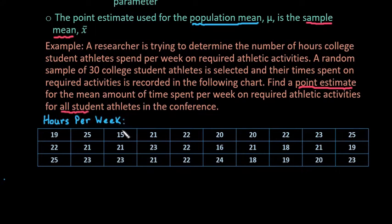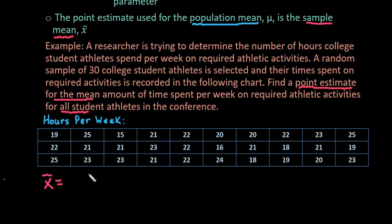We're looking at all student athletes in the conference and trying to figure out a valid point estimate for the mean. Any time it tells you to find a point estimate for the mean, all that's telling you to do is find X-bar. X-bar is the sample mean, which means we just have to add up all of our values in the table and divide by the number of values — in this case, 30.